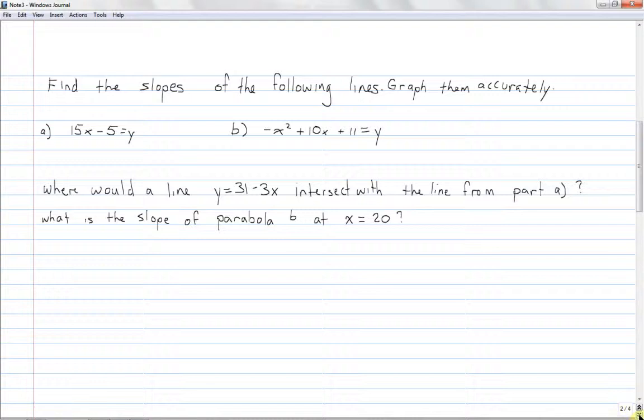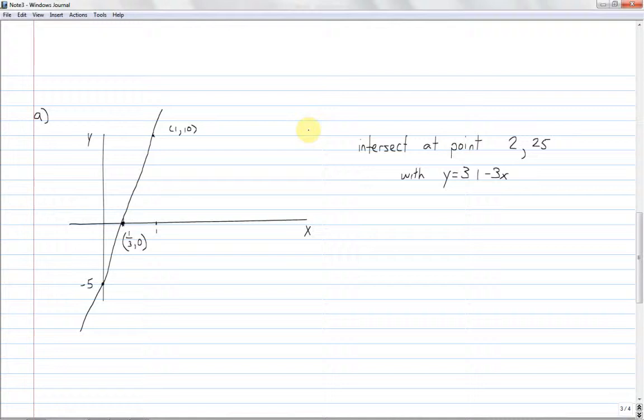So the answer to part a and its subsequent follow-up question, and I apologize, I can't draw straight lines on this tablet, it tries to correct it, and even if I trace it out with the ruler, it gives me a crooked line, so I have given up on trying that. But if you would imagine that this line is straight, the important things are you have this point, 1 over 3 comma 0, and this point, negative 5, and that you know that it intersects with the other line at point 2 comma 25, so that's x equals 2, y equals 25.